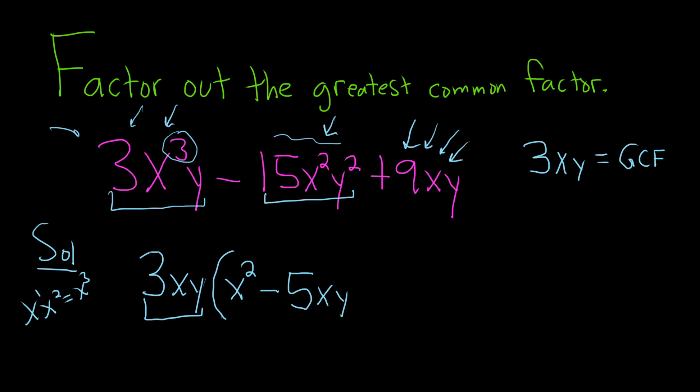The last one's really simple. We already have 3xy. There's a 9xy here. We just need a positive 3, because 3 times 3 is 9, and we'll have our xy.